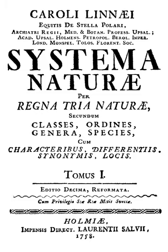Linnaeus's work had a huge impact on science; it was indispensable as a foundation for biological nomenclature, now regulated by the nomenclature codes. Two of his works — the first edition of Species Plantarum for plants and the tenth edition of Systema Naturae — are accepted among the starting points of nomenclature. Most of his names for species and genera were published at very early dates, and thus take priority over those of other, later works.